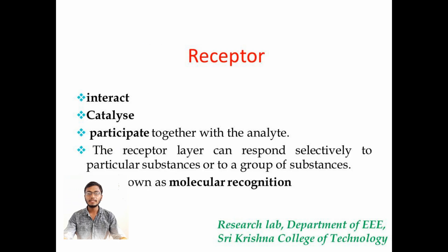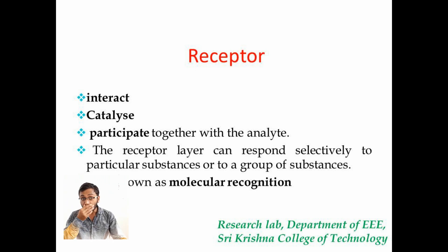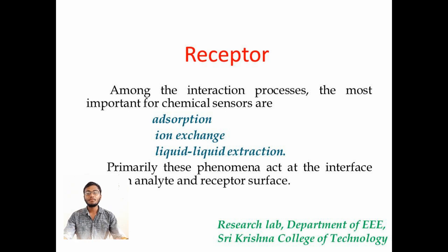The receptor is a layer which interacts with the chemical reaction. It acts as a catalyst and speeds up the chemical reaction. The receptor layer is secondary to the transducer. It sends a signal to the transducer for processing. A receptor follows absorption, ion exchange and liquid extraction.